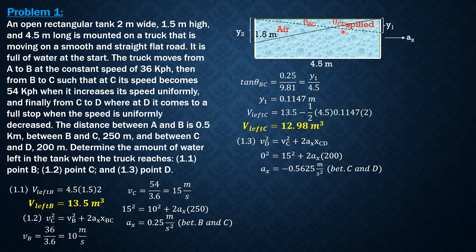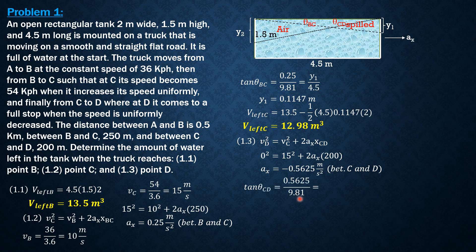So tan(theta_CD) is equal to a_x, which is 0.5625 over g = 9.81, equals Y2 over 4.5. So 0.5625 over 9.81 equals Y2 over 4.5, so Y2 is equal to 0.258 meters.